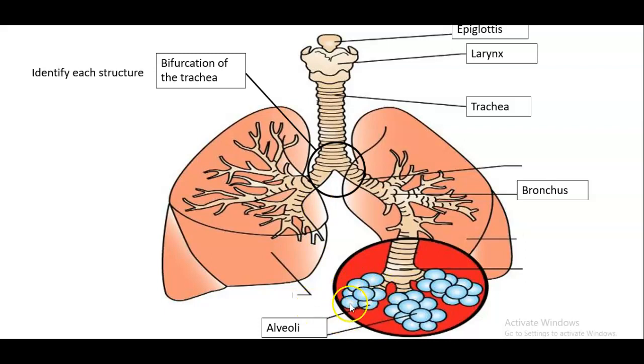And then we have down here, the alveoli and the alveoli are those tiny little grape like structures, and they are responsible for the exchange of oxygen and carbon dioxide to the blood.